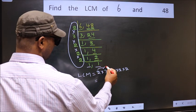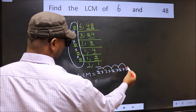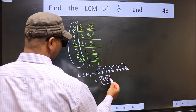So let us multiply these numbers. 2 into 3, 6 into 2, 12 into 2, 24 into 2, 48. So 48 is our LCM.